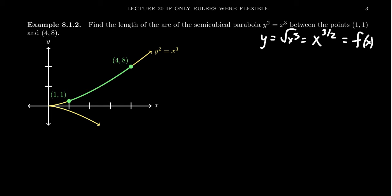So notice that if we go from (1, 1), that's where x equals 1, to (4, 8), that's when x equals 4. If we want to find the length of this arc, it makes sense to use the arc length formula we had learned before.